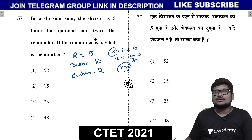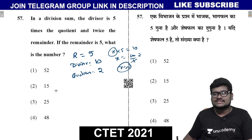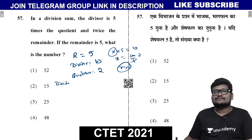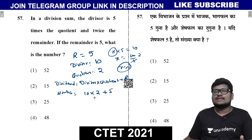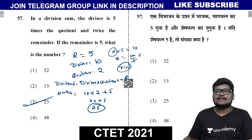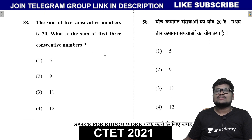So the remainder and divisor lead to: divisor into quotient plus remainder equals the number. The dividend equals divisor multiplied by quotient plus remainder. Option three is the correct answer.